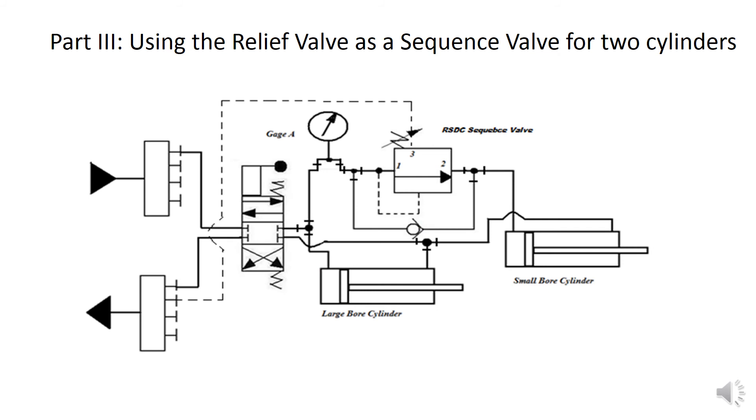Part 3, using the relief valve as a sequence valve for two cylinders, appears on page 122. Notice in the diagram that the relief valve, this valve here, identified as the RSDC sequence valve, is the very same valve that we saw in the last experiment, but it's not drawn the same way. In this illustration, it's drawn just a little bit older. This is the older style of drawing this kind of a valve, but it communicates the same information.